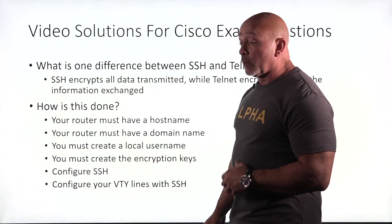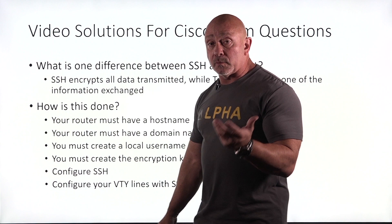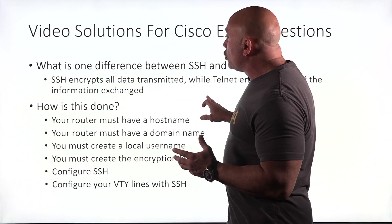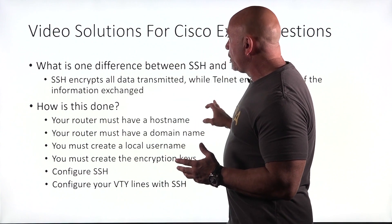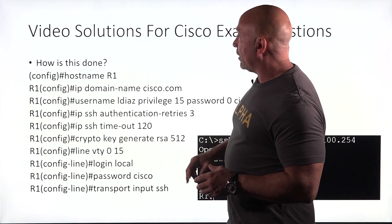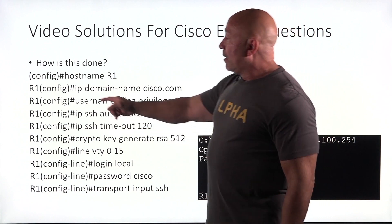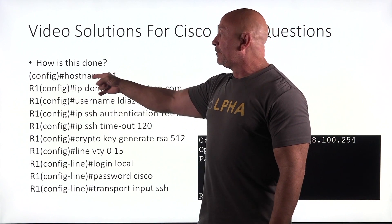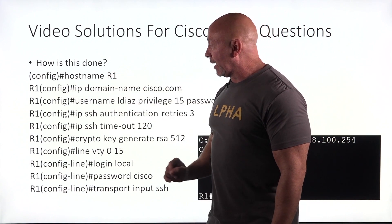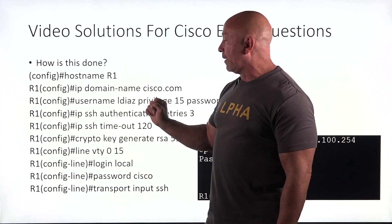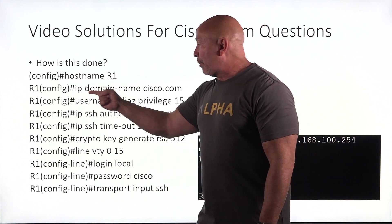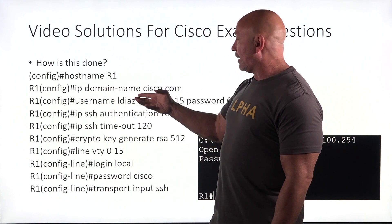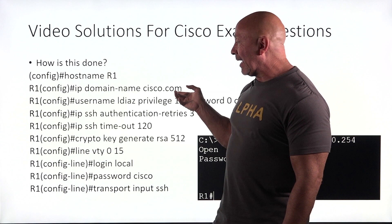Then you configure your SSH, and then you configure your VTY lines, which are your terminal lines. So how exactly do we do this? We configure the hostname — there you go, R1 — then IP domain-name cisco.com. That's your domain name.